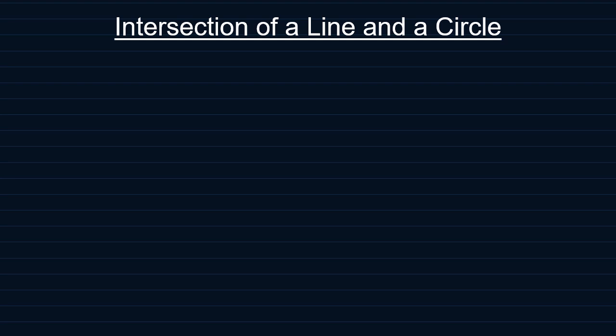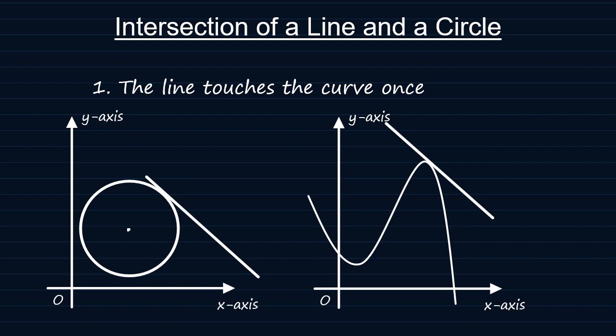Number one is when a line touches the circumference of a circle or of a curve only once. Such a line is called a tangent to the curve.